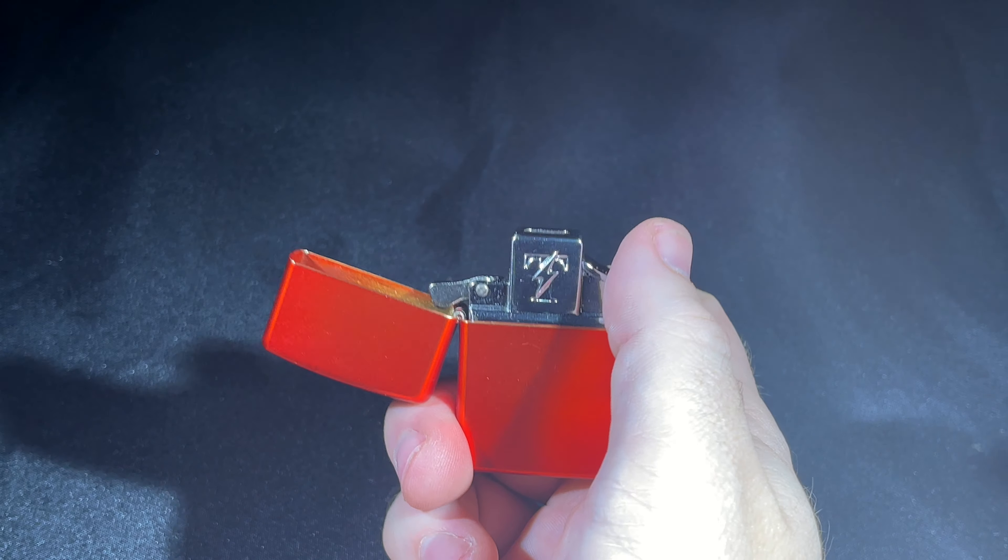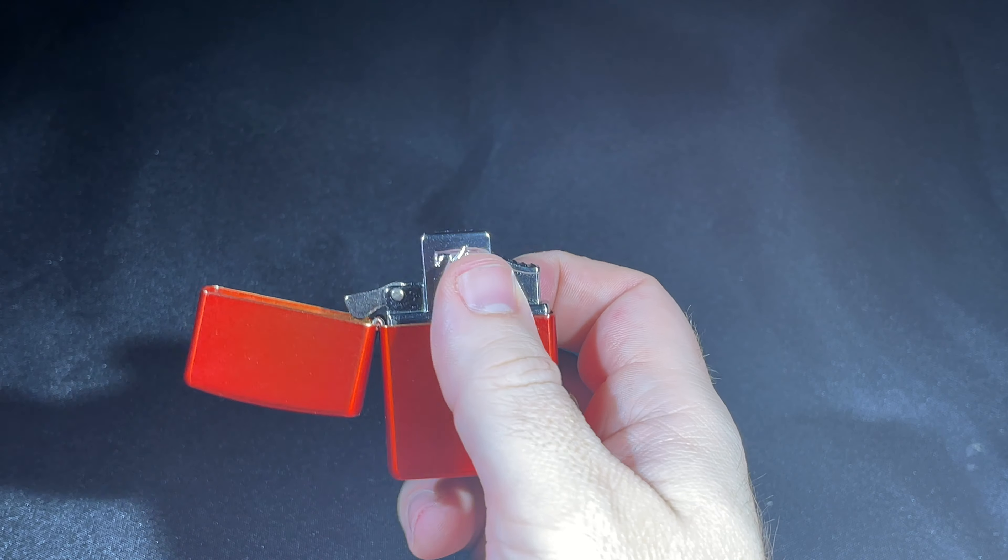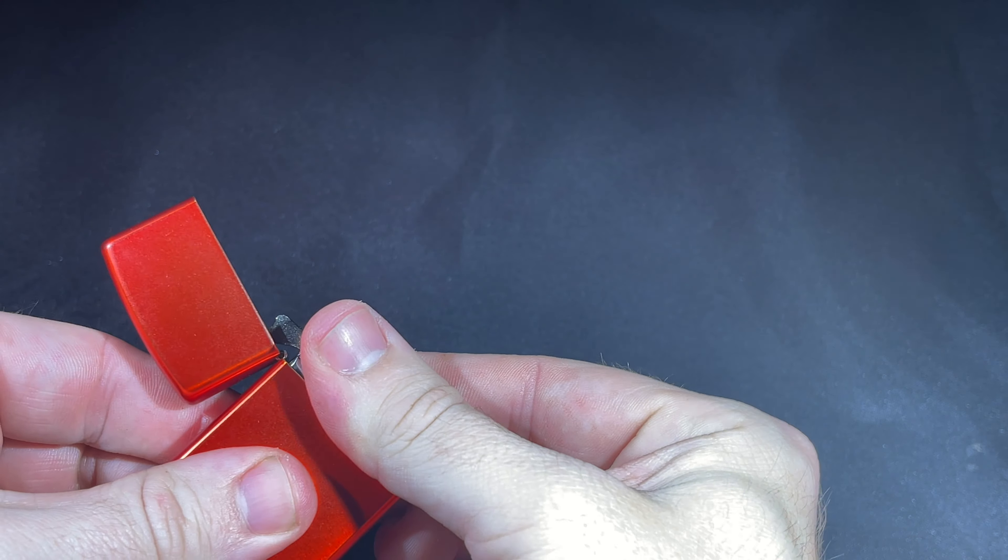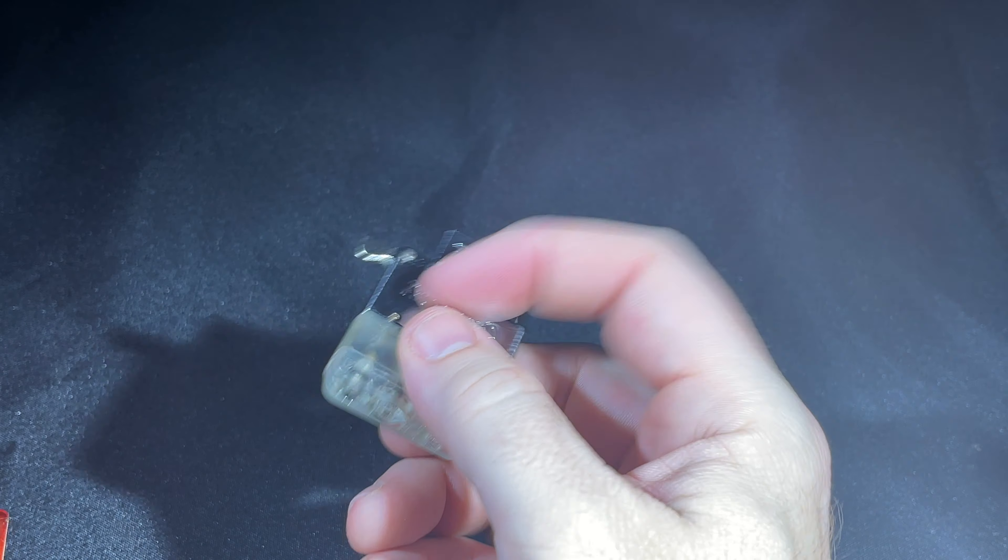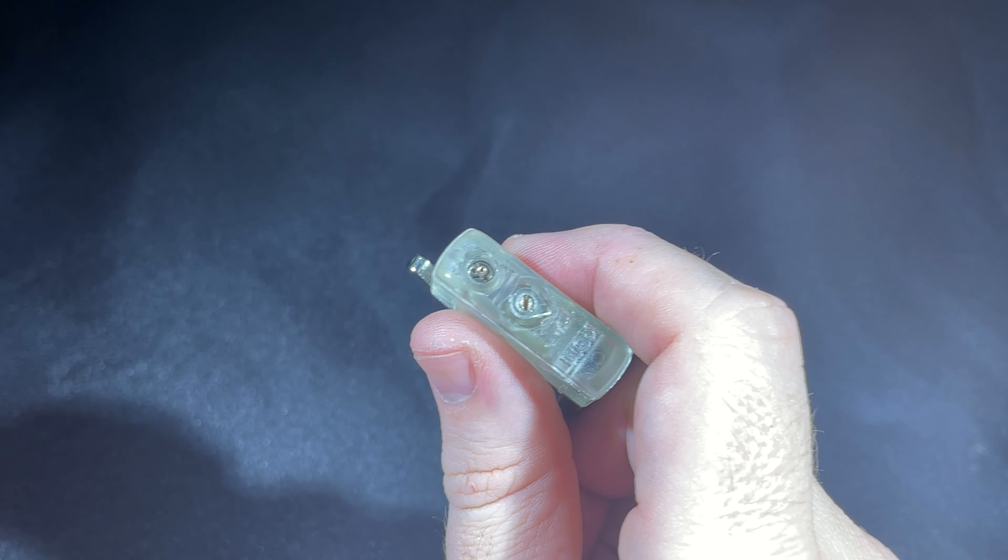As for the specifics on the Thunderbird FT flat flame, it is a refillable insert that uses the same standard butane that you'd use on your other lighters. The valve is right there on the base.